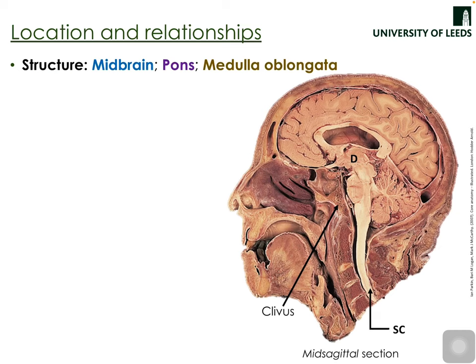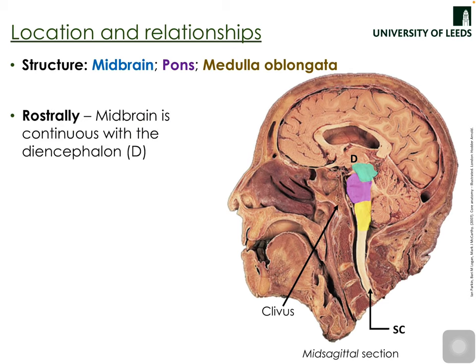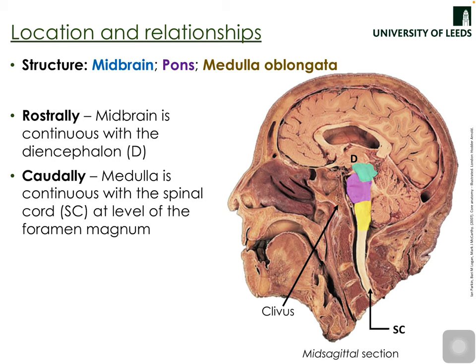Looking at the location of the brainstem in a midsagittal cadaveric view: the brainstem is composed of three portions — the midbrain, the pons, and the medulla oblongata. The midbrain, highlighted in blue, is the rostral-most portion and is continuous with the diencephalon, which sits on top of it. The pons is below the midbrain, and below that is the medulla oblongata — the caudal-most portion — which continues with the spinal cord at the level of the foramen magnum.